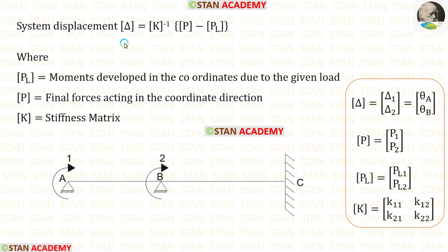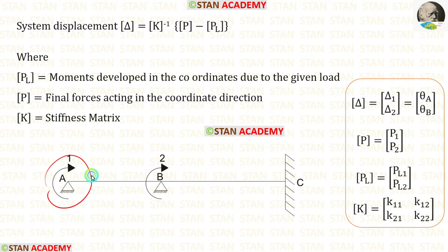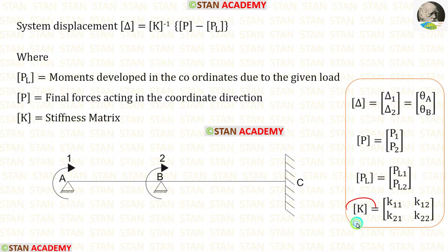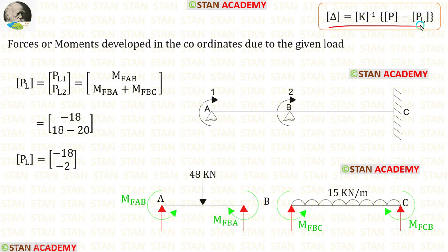The formula to find the displacement delta matrix is: delta = K⁻¹ × (P − PL). In this analysis there are two coordinates, so the delta, P, and PL matrices will each have two values. The size of the stiffness matrix will be 2×2, meaning two rows and two columns.